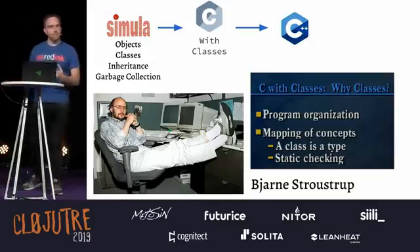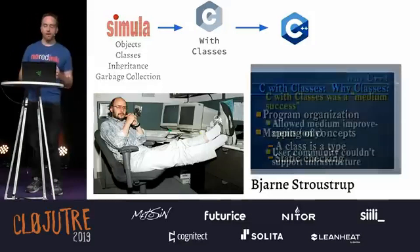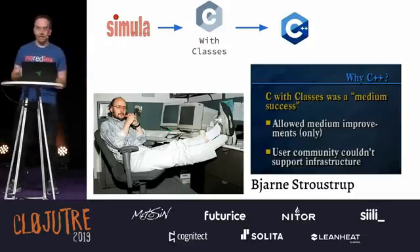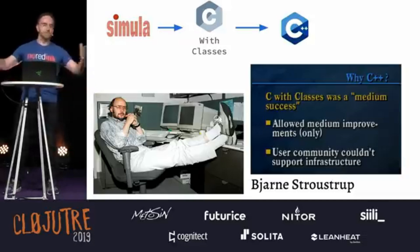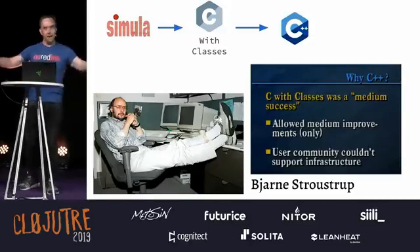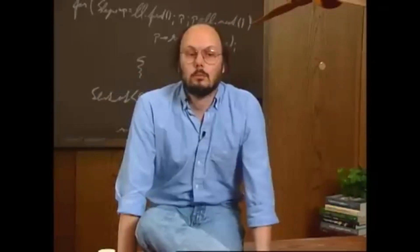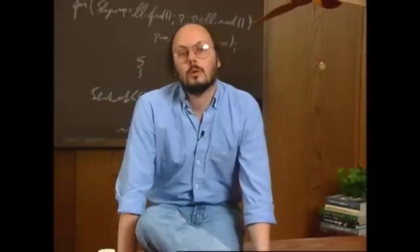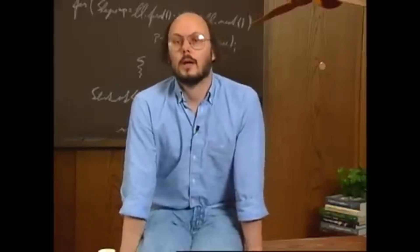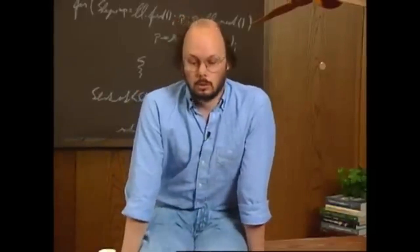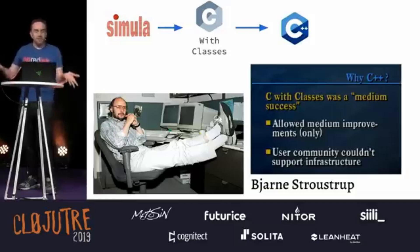Then he runs into a problem, which is that C with Classes is what he calls a medium success. The problem with being a medium success, as he explains, is that it's like: OK, this works, I've got a few people using it, a couple of users, it's pretty nice, they're happy with it. But the problem is that I'm the only maintainer, and there's too few of us to spread the maintenance burden around. So I'm kind of in a pickle.